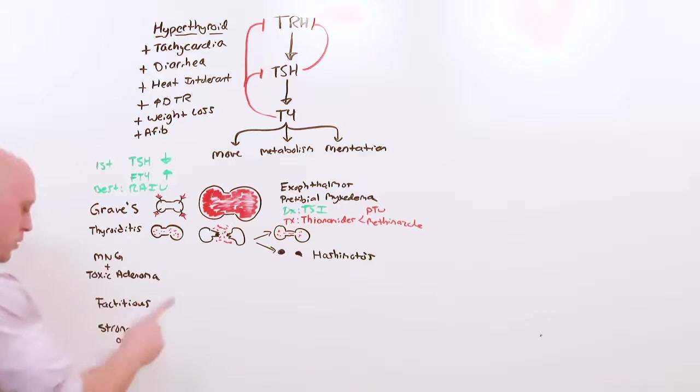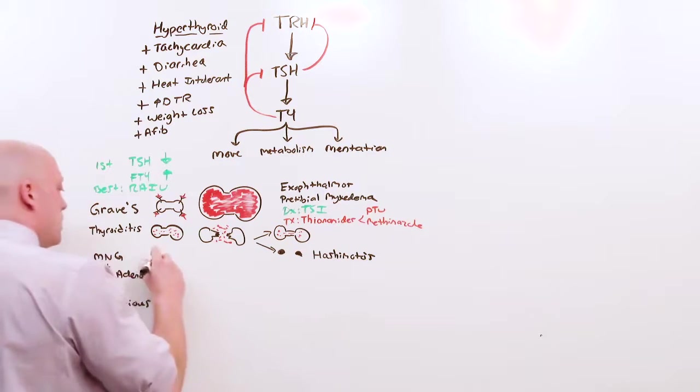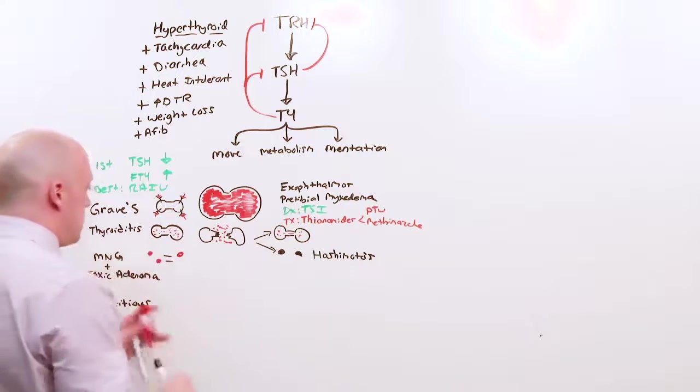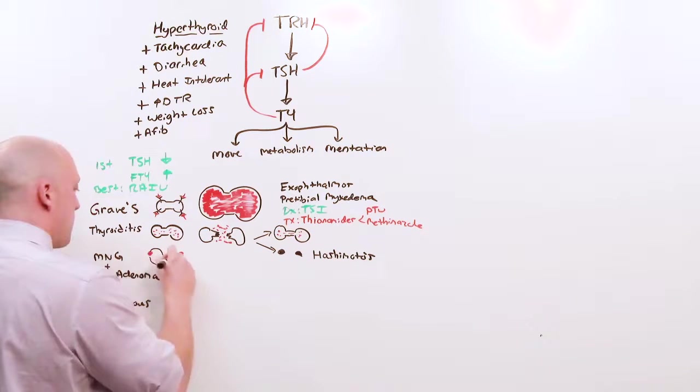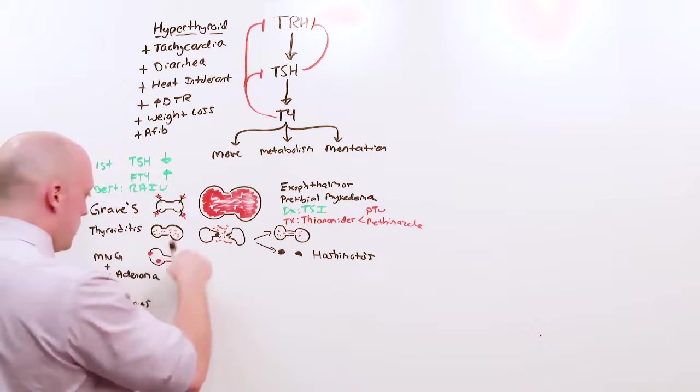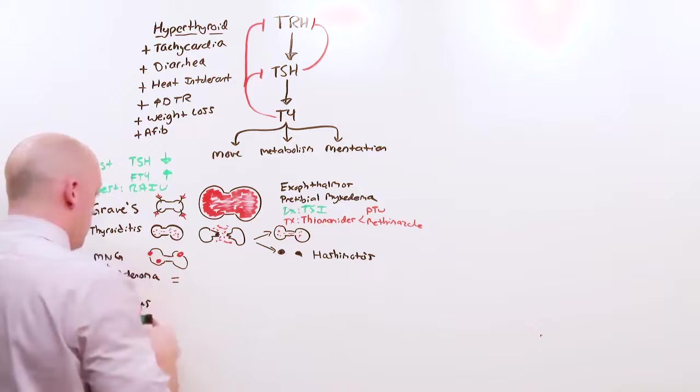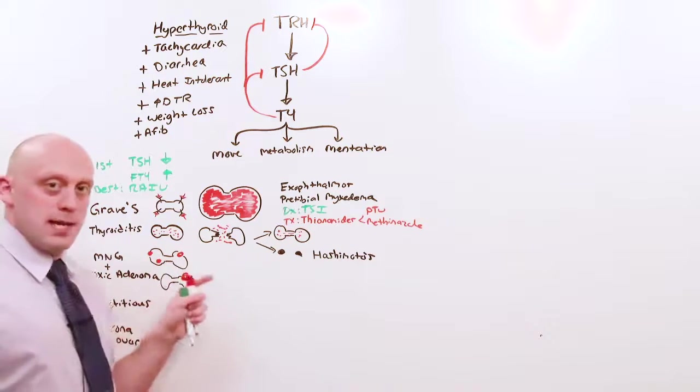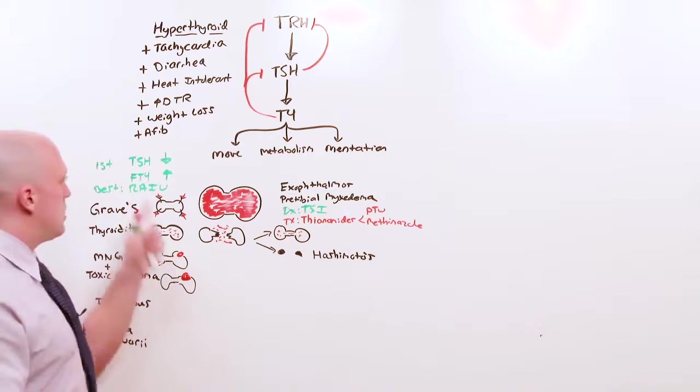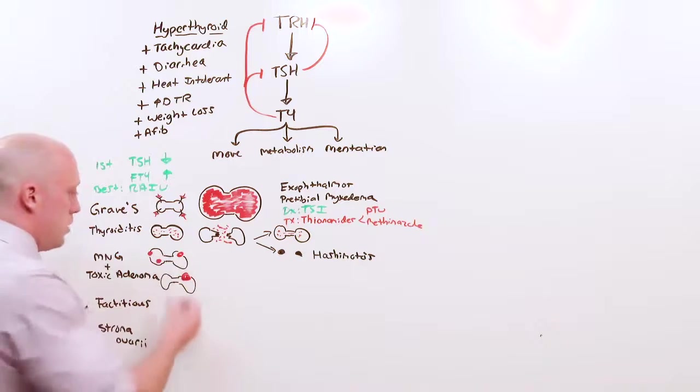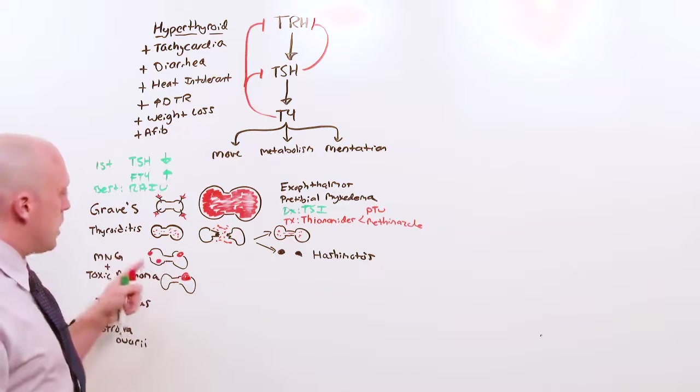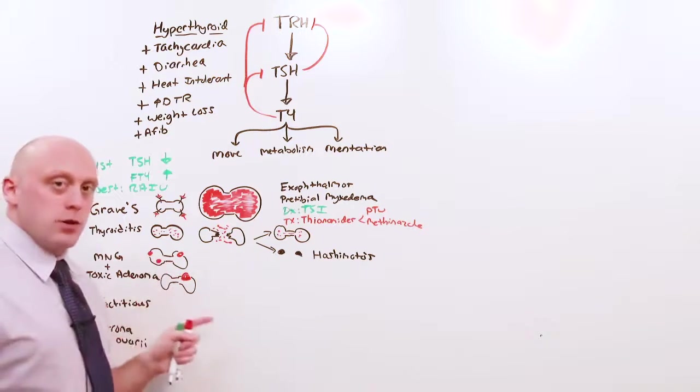Multinodular goiter and toxic adenoma are essentially the same thing. Multinodular goiter means there's multiple nodules, and toxic means makes T4. In multinodular goiter, there's a bunch of these little things that are active. In toxic adenoma, there's just one really big one. They're all making T4. In both cases, because T4 is being made in excess, autonomously secreted, the TSH will be depressed. The rest of the thyroid is not doing anything because there's no TSH. But these are active. So in an RAI uptake, you'll see exactly that. You'll see that goiter light up.